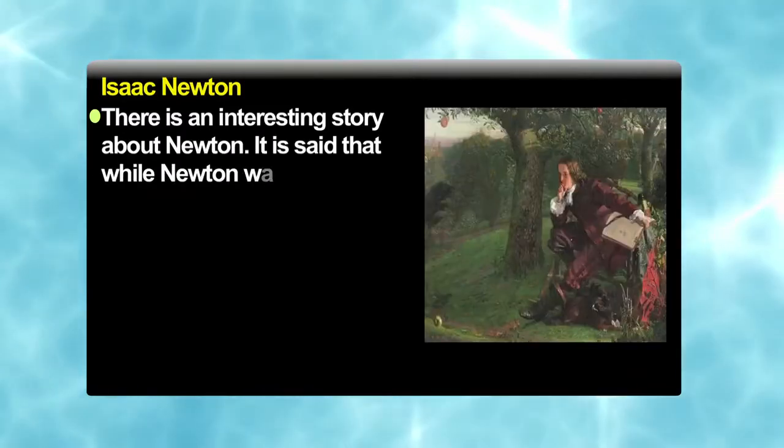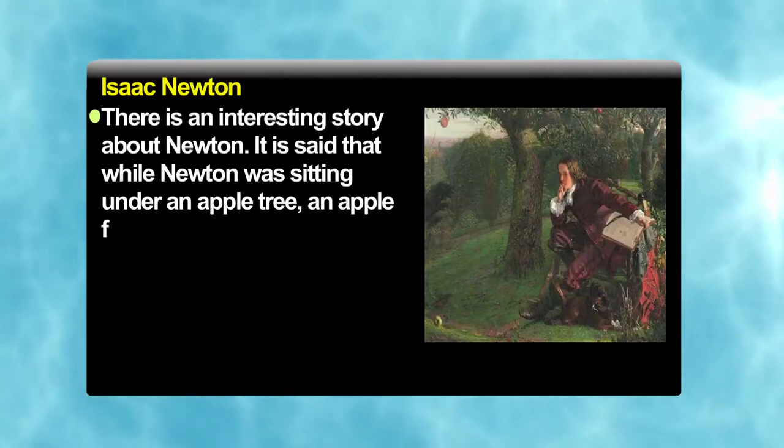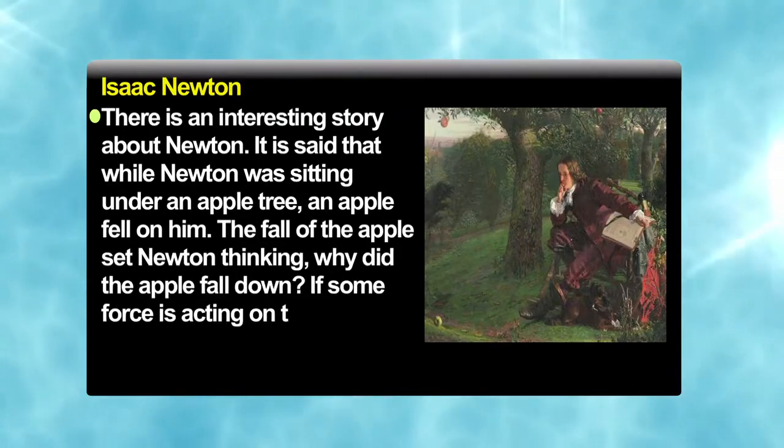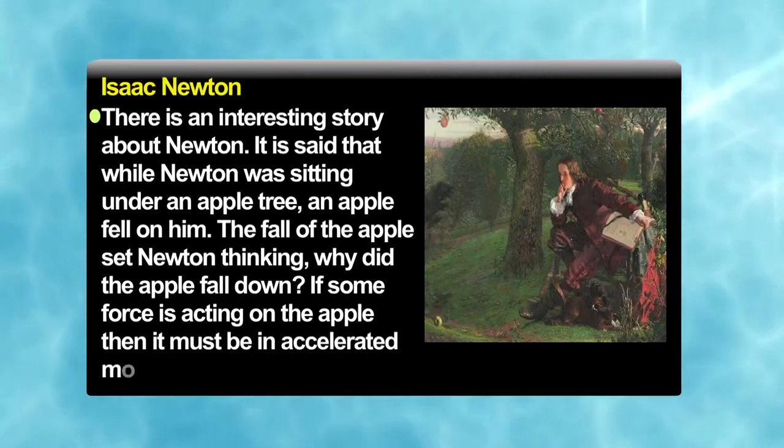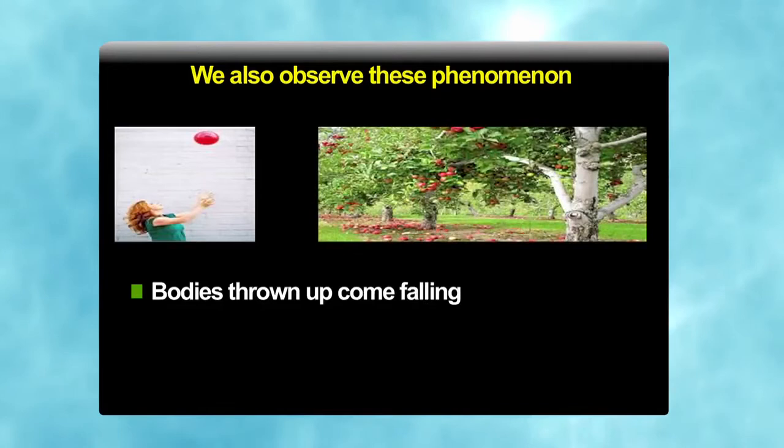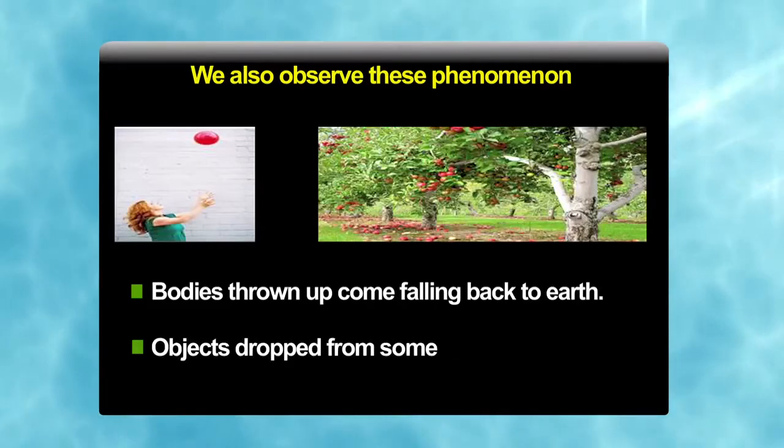It is said that while Newton was sitting under an apple tree, an apple fell on him. The fall of the apple set Newton thinking, why did the apple fall down? If some force is acting on the apple, then it must be in accelerated motion. We also observe these phenomena in day to day life. That is when bodies are thrown up, they come falling back to the earth. Objects dropped from some height also fall towards the earth.